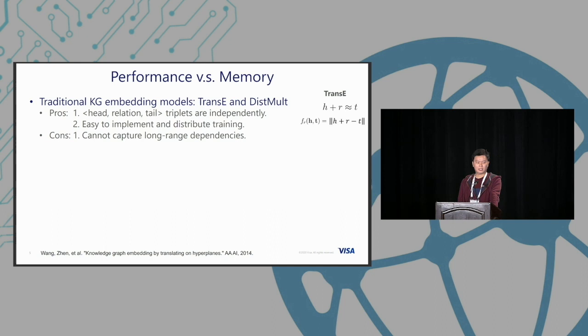Traditional KG embedding models like TransE only contain head, relation, and tail. They treat these things independently so it's very easy to implement and distribute. But there's also a disadvantage: it cannot capture long range dependency. For example, if we want to consider multi-hop neighborhood information, a traditional TransE cannot do that based on these simple equations.